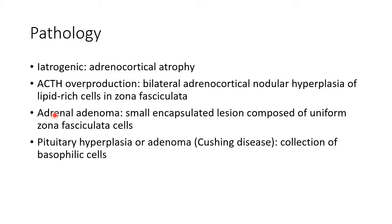In case of adrenal adenoma, there will be a small encapsulated lesion composed of uniform zona fasciculata cells. In case of pituitary hyperplasia or adenoma — that is, in case of Cushing disease — there will be a collection of basophilic cells.